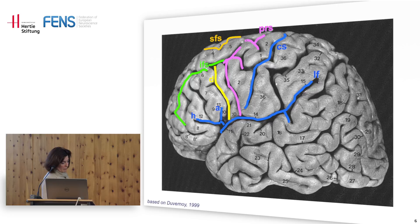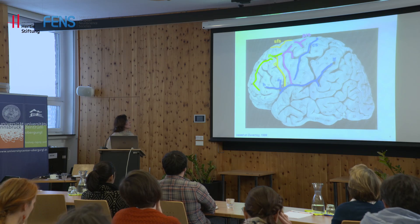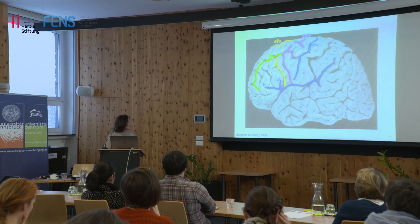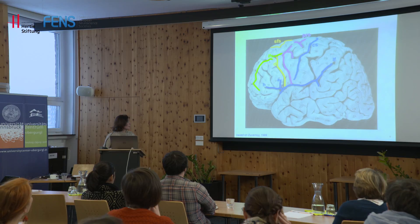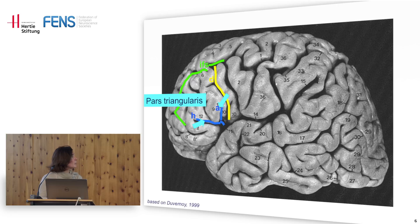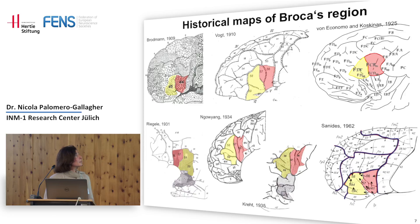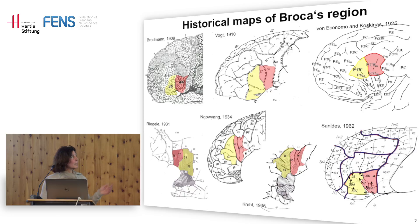We know from anatomy of normal brains that the area destroyed by the lesion in Tan's brain is localized in the pars triangularis — between the horizontal branch and the ascending branch of the lateral fissure — and also the opercular part behind the diagonal sulcus. So pars triangularis and pars opercularis correspond to areas 44 and 45, with area 46 down here. Many anatomists then examined the cytoarchitecture and myeloarchitecture of these brain regions and published what we call the classical maps of Broca's region.